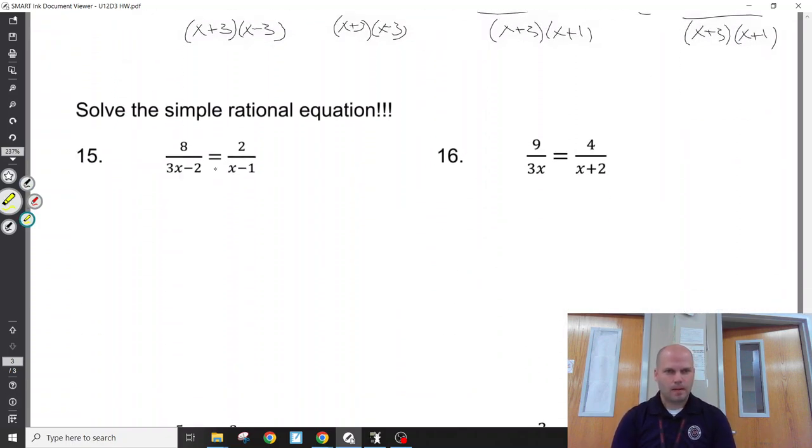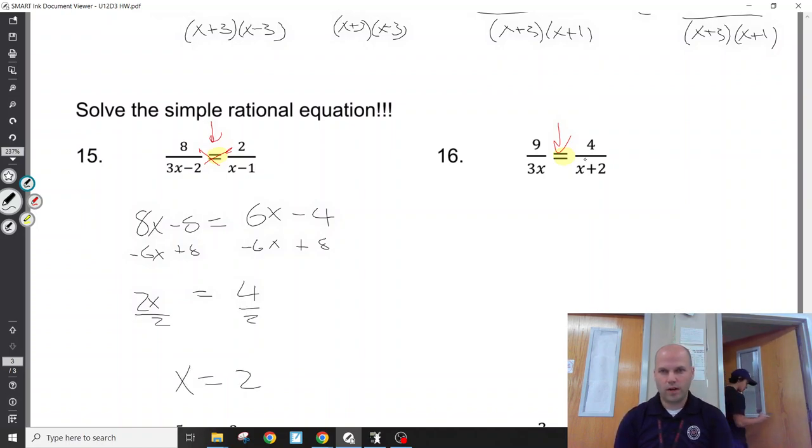Now, pay attention. Because like on your quizzes, on your tests, these things come at random. No longer do we have an add or a subtract. We have an equals. When we're solving, it's different. You don't need a common denominator to solve. We can just cross multiply. 8 times x minus 1. 2 times 3x minus 2. Solve this equation. It is different. It is something that you need to just recognize. Be ready to adjust and adapt to get our answer fairly easily.